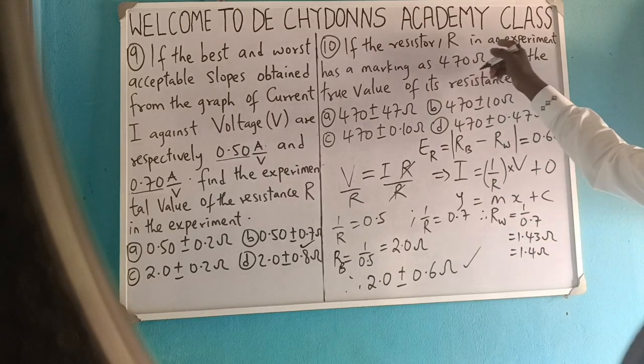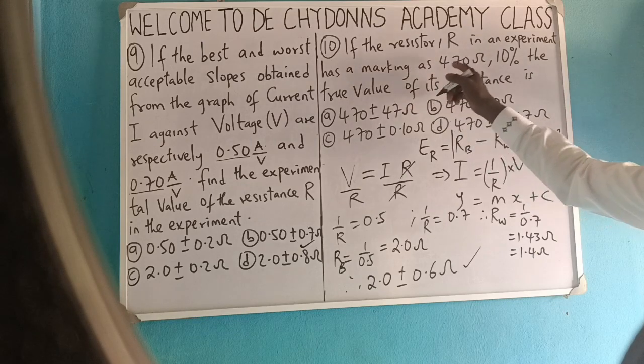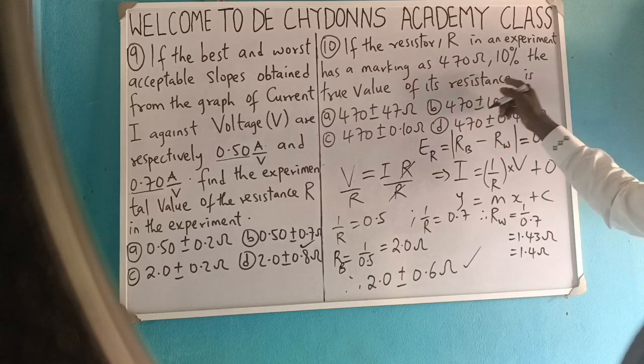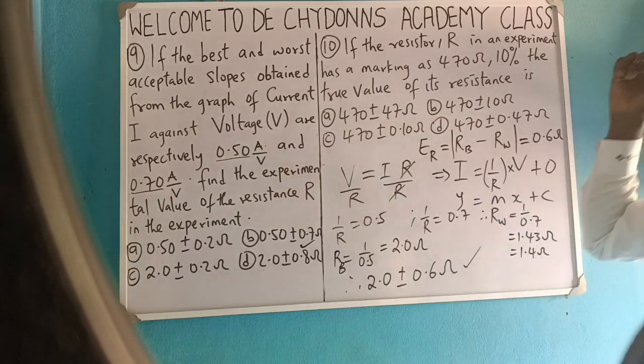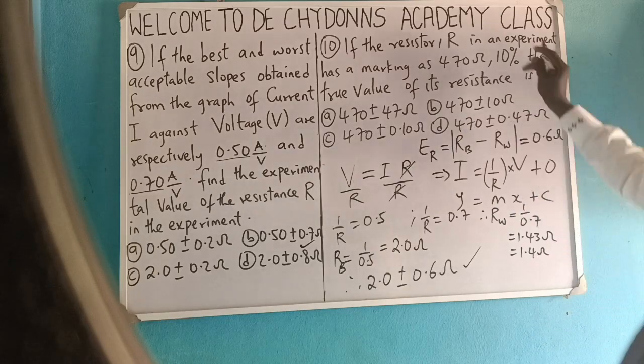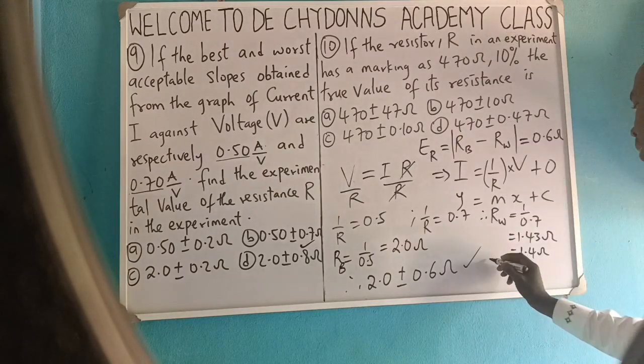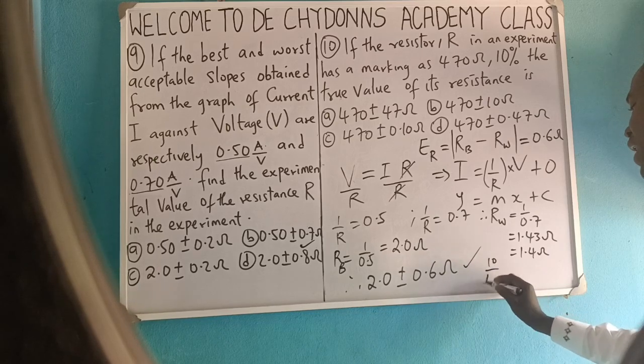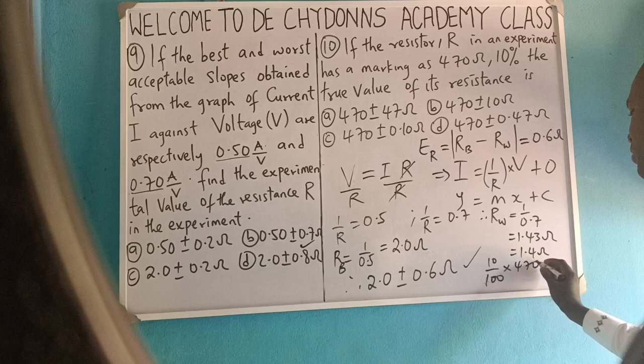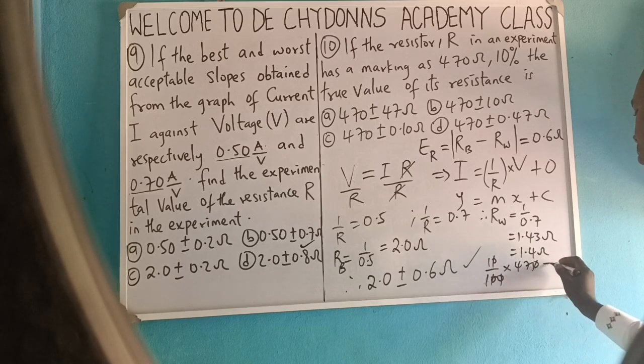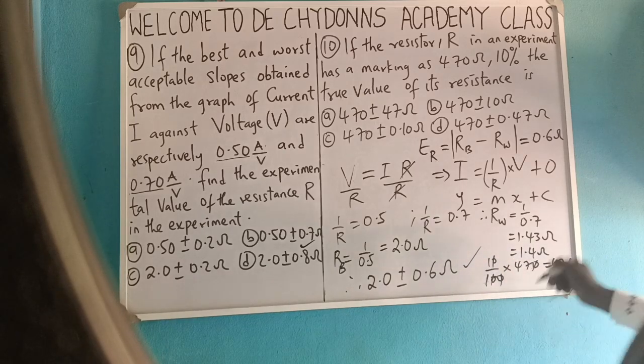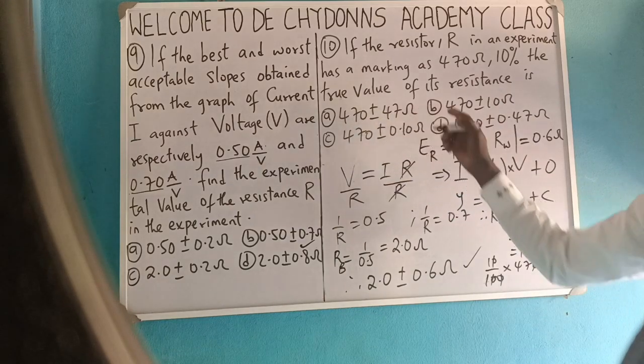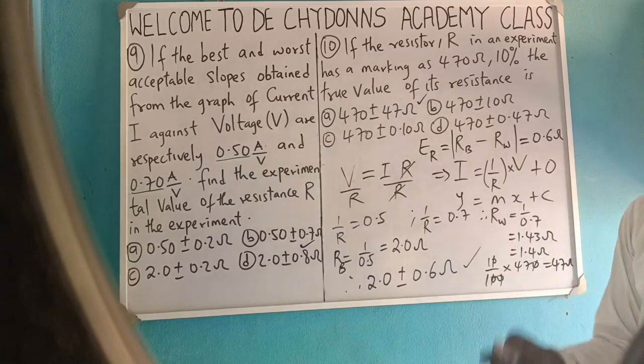We will go to question number 10. If the resistor R in an experiment has a marking as 470 ohms, 10%, the true value of its resistance is... This is very simple. Get the 10% of 470: 10% means 10 over 100 times 470, we will cancel, that will give you 47 ohms. Now, the answer will be 470 plus or minus 47 ohms.